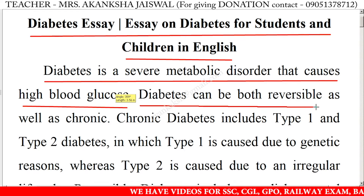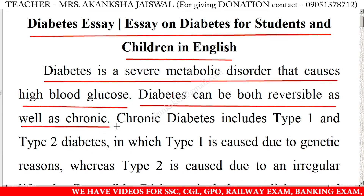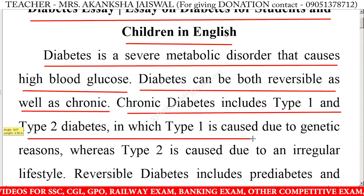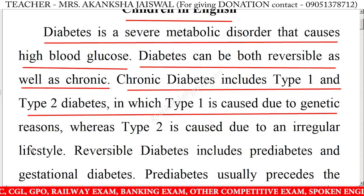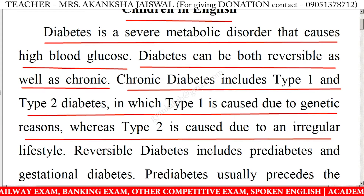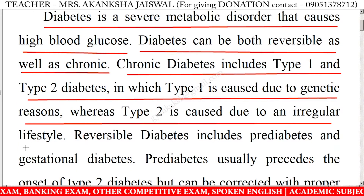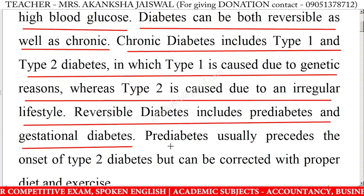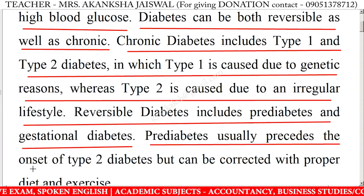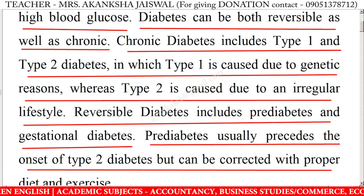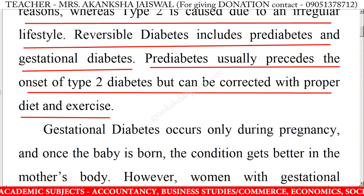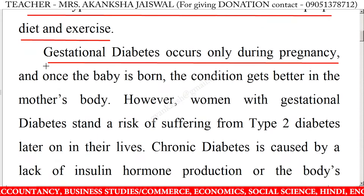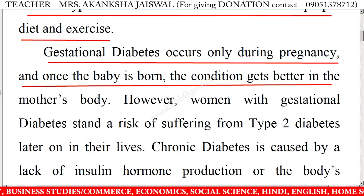Diabetes can be both reversible as well as chronic. Chronic diabetes includes type 1 and type 2 diabetes, in which type 1 is caused due to genetic reasons, whereas type 2 is caused due to an irregular lifestyle. Reversible diabetes includes prediabetes and gestational diabetes. Prediabetes usually precedes the onset of type 2 diabetes but can be corrected with proper diet and exercise. Gestational diabetes occurs only during pregnancy, and once the baby is born, the condition gets better in the mother's body.